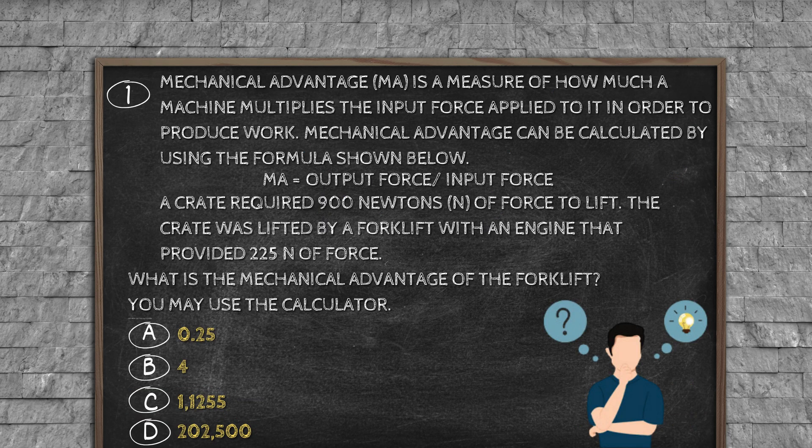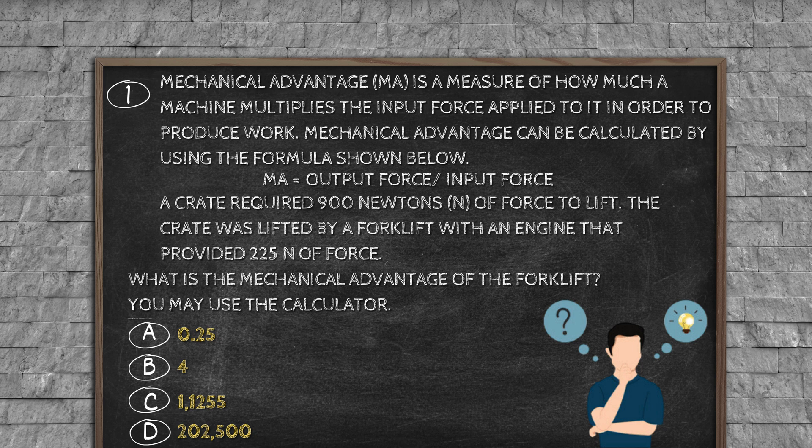Question number one: Mechanical advantage (MA) is a measure of how much a machine multiplies the input force applied to it in order to produce work. Mechanical advantage can be calculated by using the formula shown below. MA equals output force slash input force. A crate required 900 newtons of force to lift. The crate was lifted by a forklift with an engine that provided 225 newtons of force. What is the mechanical advantage of the forklift? You may use the calculator. Option A: 0.25, option B: 4, option C: 1,125, option D: 202,500.